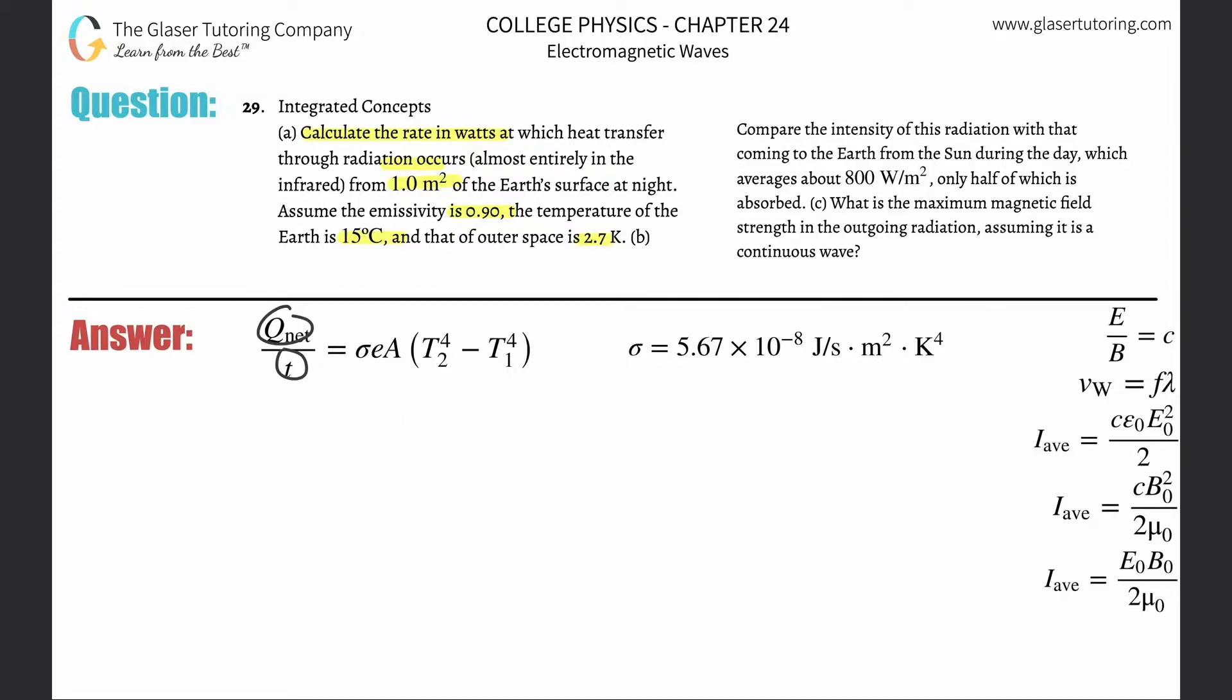Energy per time, that is known as a watt. So that's going to be equal to sigma E A, T₂ raised to the fourth minus T₁.